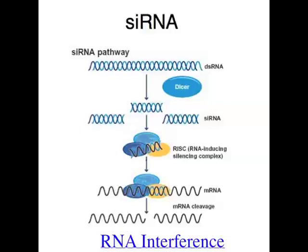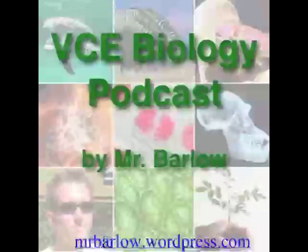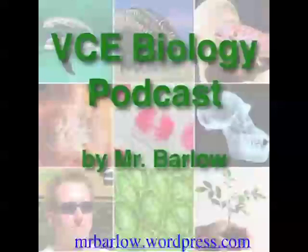RNA interference has a great deal of potential. For example, if we could figure out a way to get it to turn off dominant disease-causing genes, we could basically get rid of some diseases. So it's a fantastic potential technology. And that brings episode 34 of the VCE Biology Podcast to a close. I'm Mr. Barlow — thanks for listening. We'll see you next time.